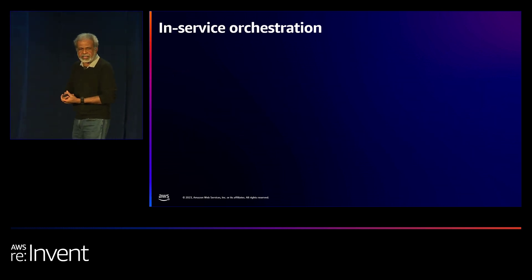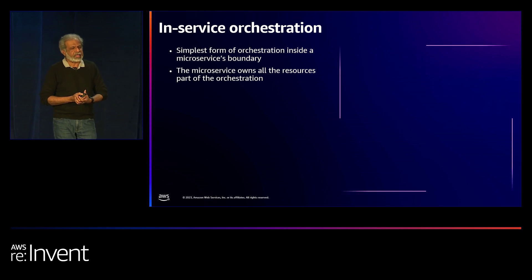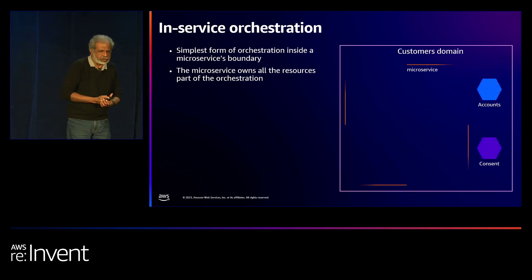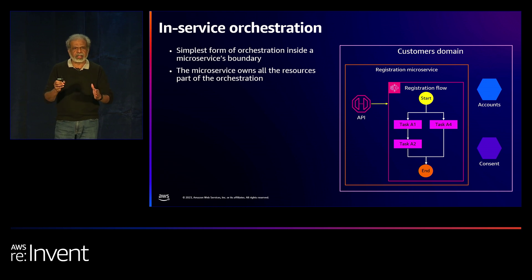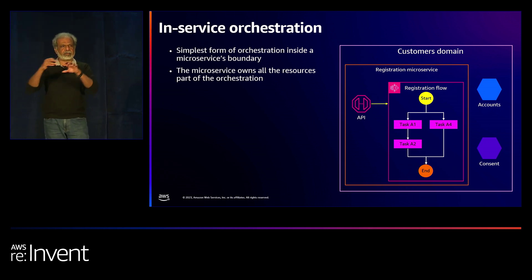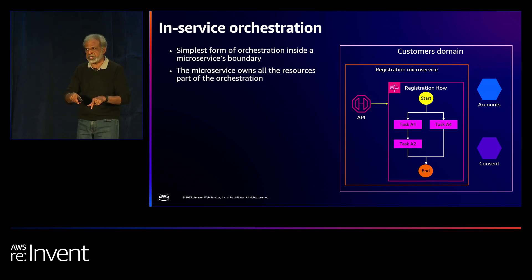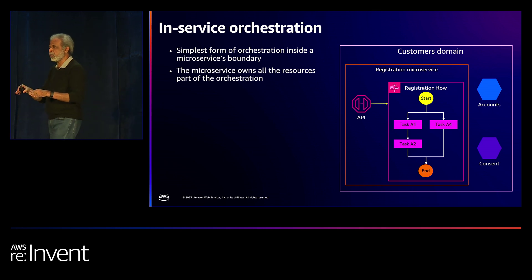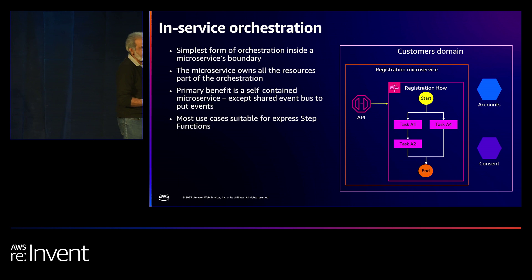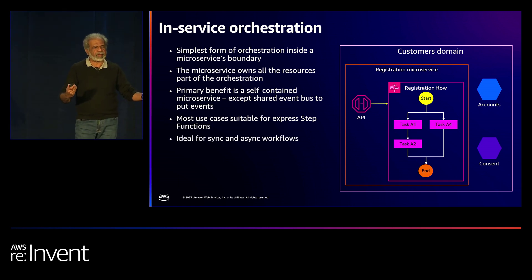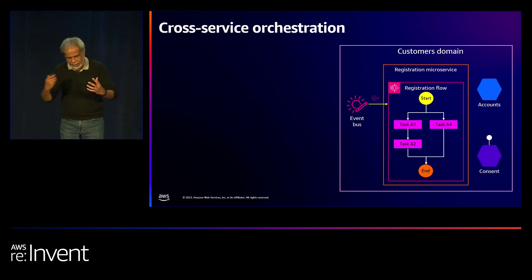In-service orchestration is simple. You have a domain with a microservice and a step function. An API invokes the step function, it does some logic — and everything is within that microservice. There are no arrows going outside the boundary. This is the perfect and simple form: no dependency, no hardwiring. For cross-service, you broaden the orchestration slightly — the same service needs to reach out to other microservices within the domain or even other domains, mostly via API calls.